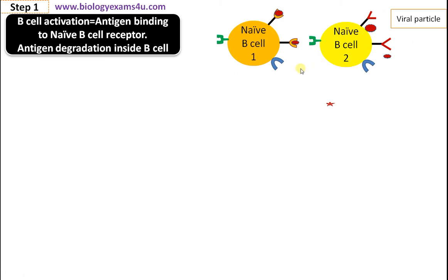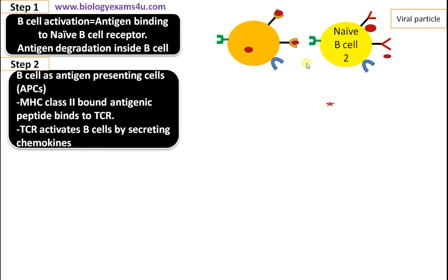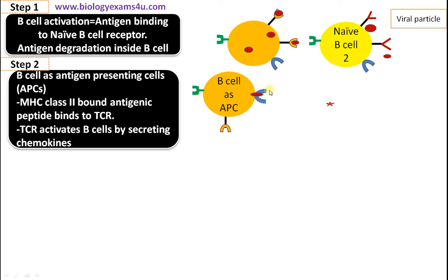This is B cell 2 with different specificity — there are different B cells with different specificities. This viral particle is compatible with B cell 1's receptor, so it binds to the B cell 1 receptor and activates B cell 1. The activated B cell engulfs the viral particle, which is degraded inside the cell, and a portion of it is presented on MHC class 2.